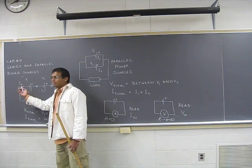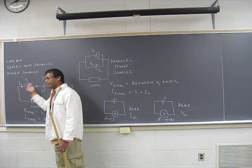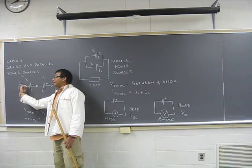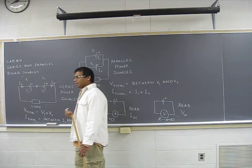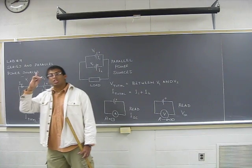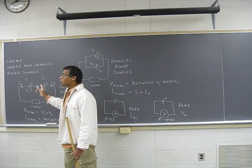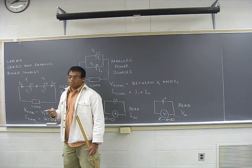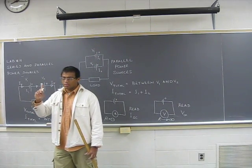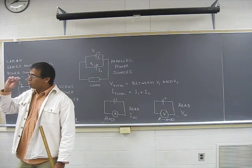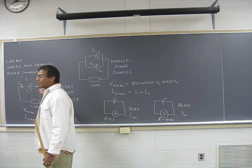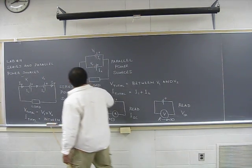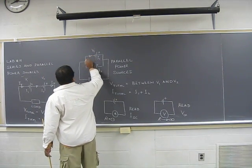Now if the same current is not flowing through each of the components, then that would be a parallel circuit. So all you have to remember is: if the same current flows through all the components, that will be a series circuit. If not, it's a parallel circuit.